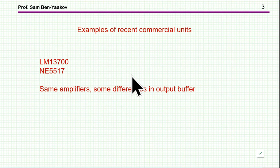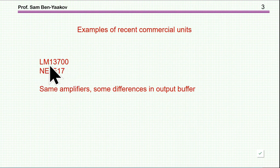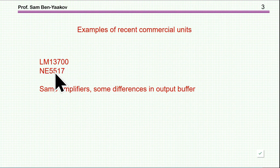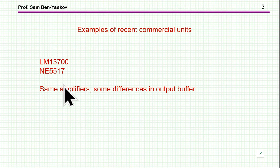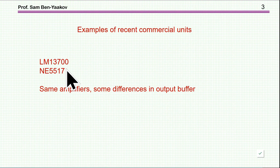There aren't many units commercially available today. The two most popular ones are made by Texas Instruments and OnSemi — both originated at other companies that were bought by these two. The difference between these two is very marginal; the basic circuit is exactly the same, with only some difference in the output buffer.